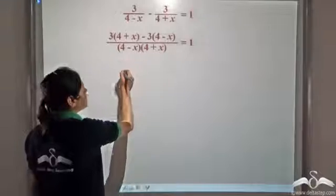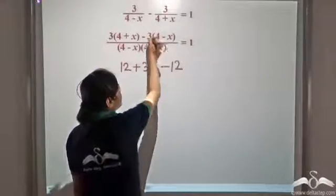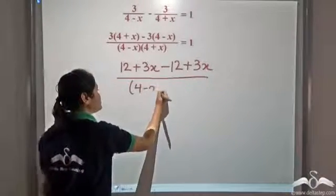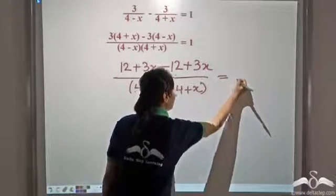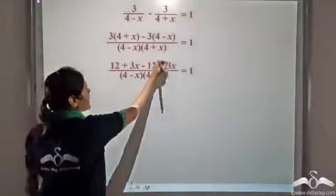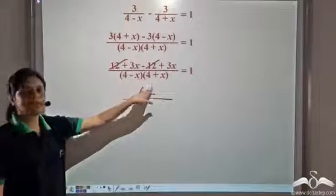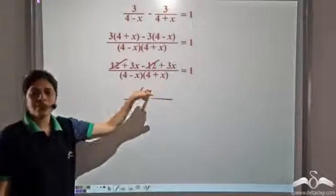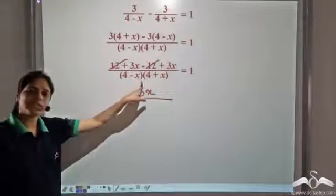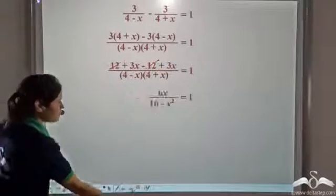Now 3 into 4 is 12, and 3 into x is 3x. Negative 3 into 4 is negative 12, and negative 3 into negative x is plus 3x, all divided by (4 minus x) into (4 plus x), equal to 1. Now 12 and negative 12 cancel out, and 3x plus 3x is 6x. Looking at the denominator — (4 minus x) into (4 plus x) — we know that (a minus b)(a plus b) equals a squared minus b squared, so this becomes 4 squared minus x squared, which is 16 minus x squared.